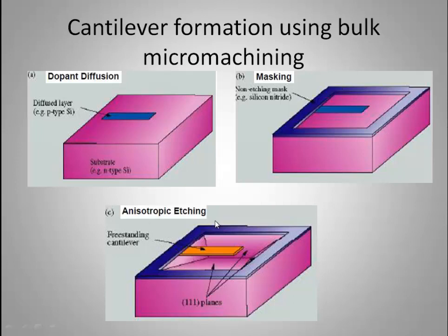The third step is Etching — either dry etching or wet etching. Looking at the figure, the etching follows the 111 plane. You can place the diffusion portion on top. If you look at the rectangular portion, the diffused area on top will be preserved, and the result can act as a cantilever beam.